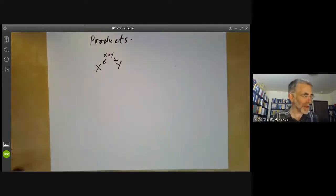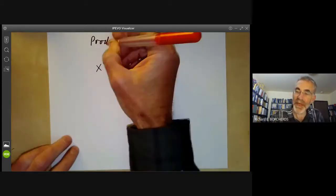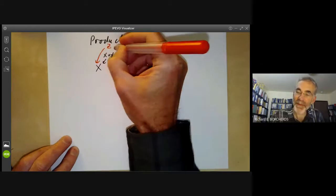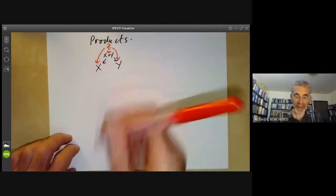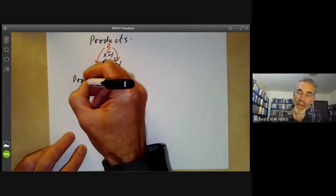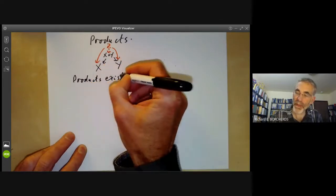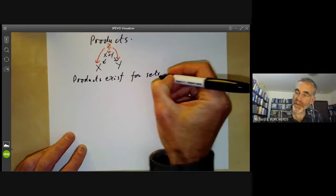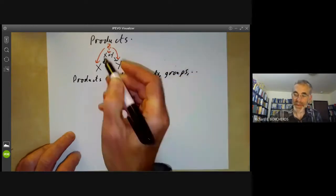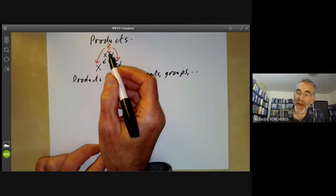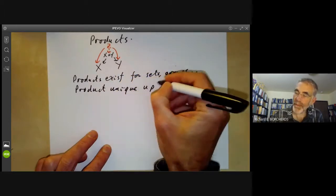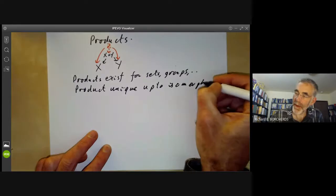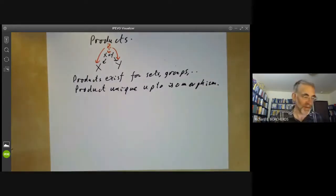A product is a universal element with maps to both x and y. This means if we've got any element z and maps to x and y, then there's a unique morphism from z to x times y. Products exist for sets, groups, and so on. Any such product is unique up to isomorphism and has most of the properties you'd expect from products of sets.